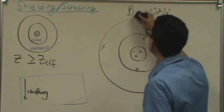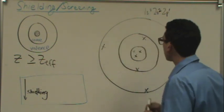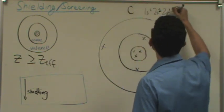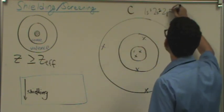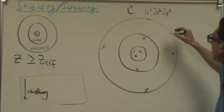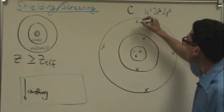Now as I go to the right one more, I'll go to carbon. And it's 1s2, 2s2, 2p2, so I'm adding another valence electron.